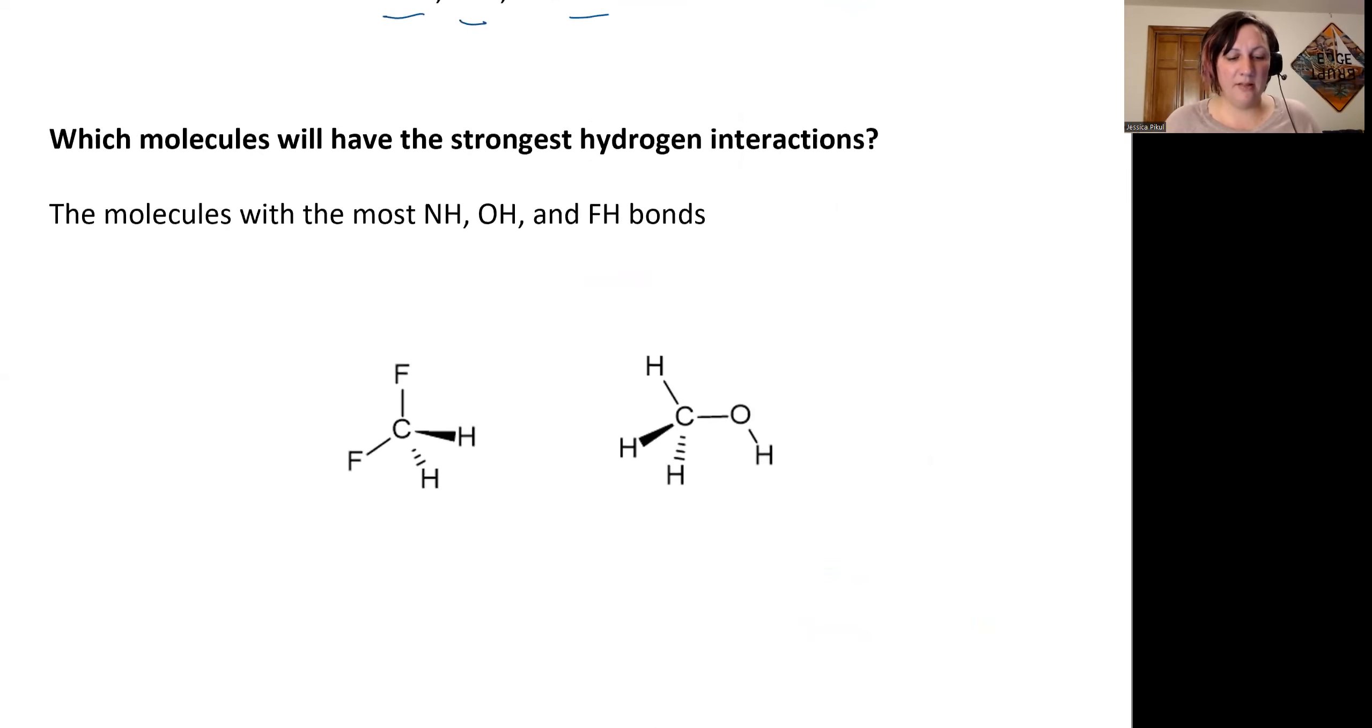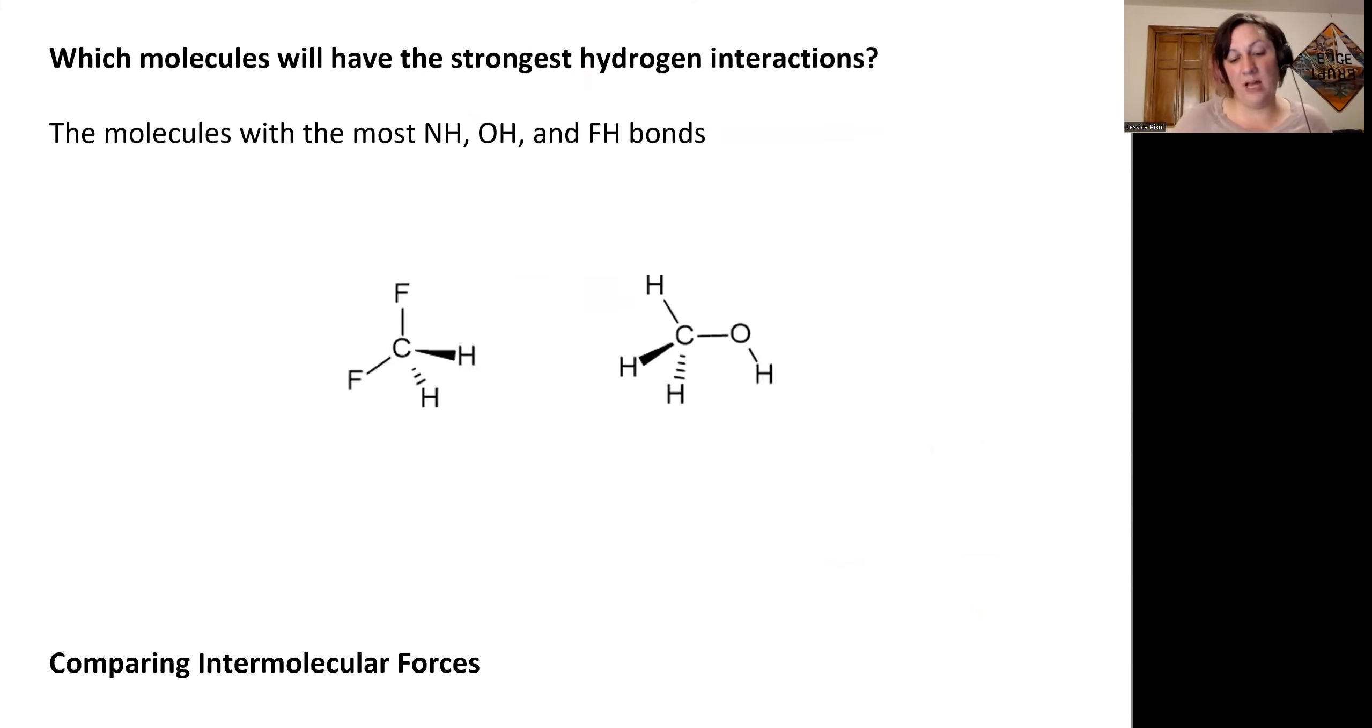So let's compare these, which of these molecules would have the strongest hydrogen interactions or which ones have them period. Remember, we're looking at NH, OH, and FH bonds only. In our first one, we have fluorines, but they're bonded to a carbon. They aren't actually bonded to a hydrogen. And so we also don't have any oxygen or nitrogen in the molecule. So there are no hydrogen interactions in this molecule.